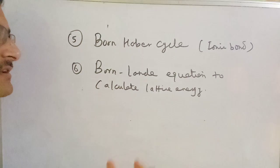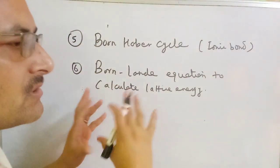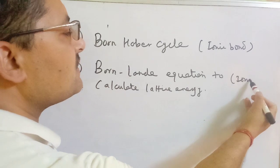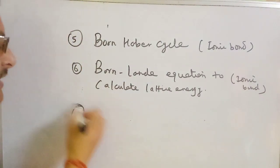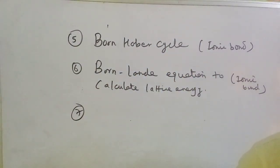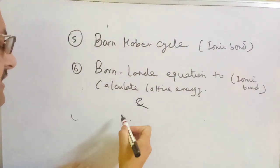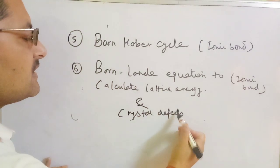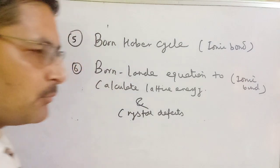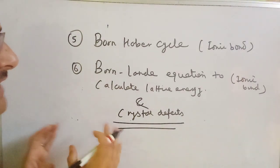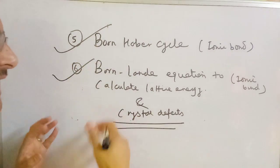This is the Born-Haber cycle equation as a derivation. Number 7 is crystal defects. We can see where crystal defects come from. Chemical bonding includes ionic bond, Born-Haber cycle, Born-Landé equation, and crystal defects.